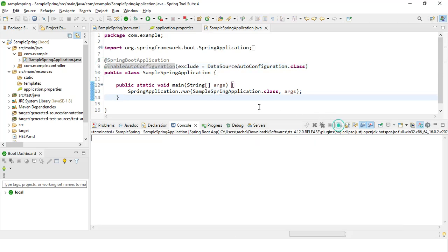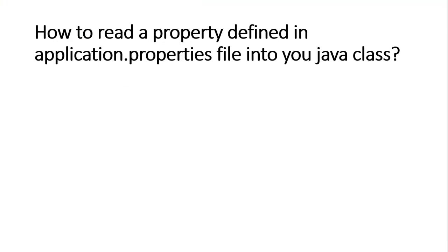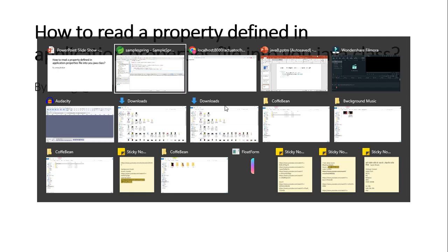Now we will move on to the next question. The next question is: suppose how to read a property defined in application.properties file into your Java class. Suppose you have defined some value in the properties file — some constant or something — and you want to read that in your Java file. How can you do it? This can be done by using the @Value annotation. We will move on to the Spring Tool Suite so I'll give you a proper practical example.